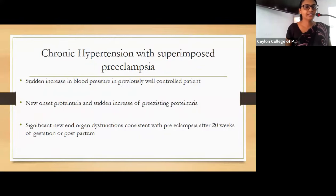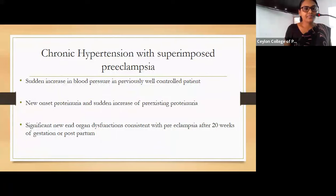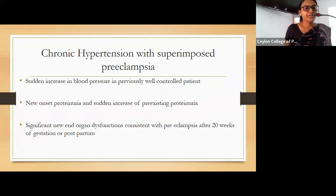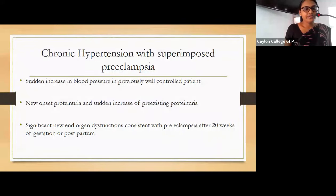Another entity is chronic hypertension with superimposed preeclampsia. This is suspected when there is a sudden increase in blood pressure in a previously well-controlled chronic hypertension patient, new onset proteinuria or sudden increase in pre-existing proteinuria, or significant new end-organ dysfunction consistent with preeclampsia after 20 weeks of gestation or postpartum.